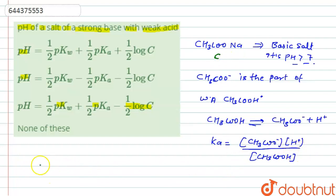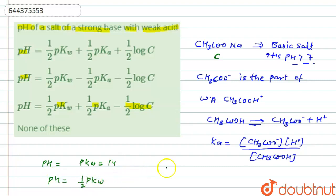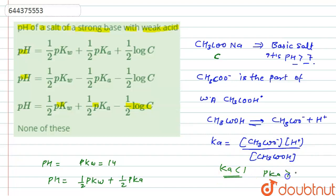So the pH will be: pH = half pKw + half pKa + half log C. The half pKw value equals 7 (since pKw = 14). Since this is a basic salt, pH is greater than 7, so we add half pKa. Since Ka < 1, pKa > 0, and we add half log C.